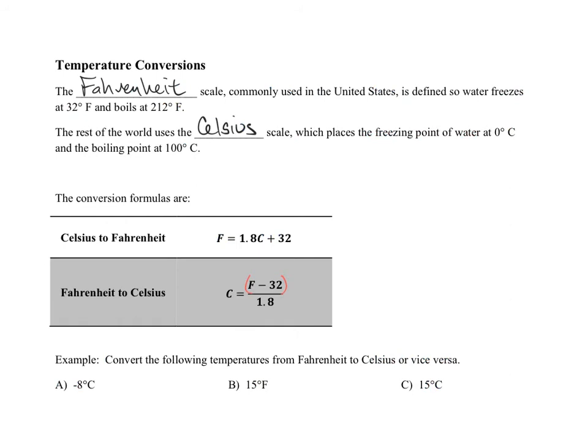One last type of conversion we have here are temperature conversions and we have two different temperature scales in this world. It bothers me to no end, but here they are. We have Fahrenheit and Celsius. So Fahrenheit is just an oddball scale like most things in the US. Water freezes at 32 degrees and boils at 212 degrees. Whereas Celsius feels a whole lot better as water freezes at zero and boils at 100.